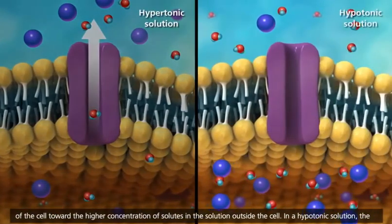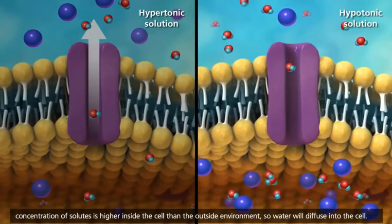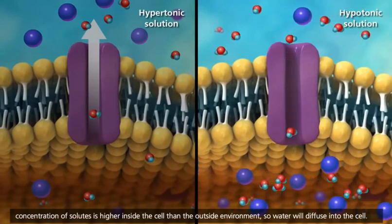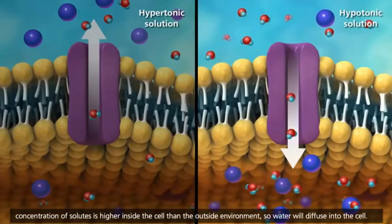In a hypotonic solution, the concentration of solutes is higher inside the cell than the outside environment, so water will diffuse into the cell.